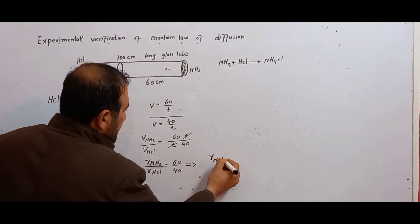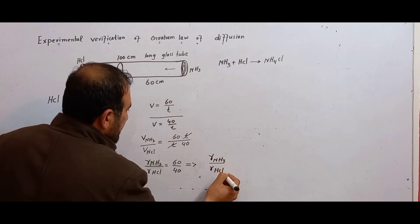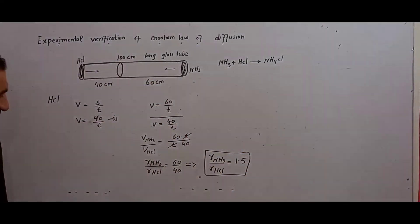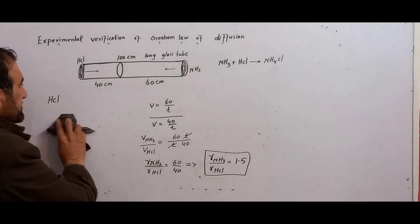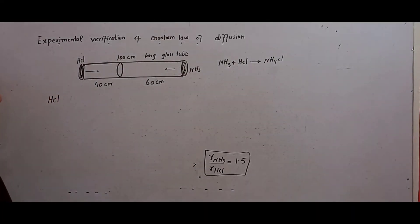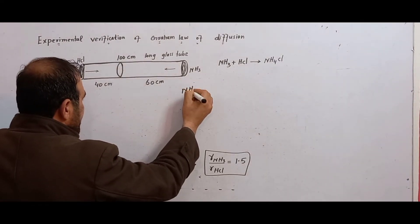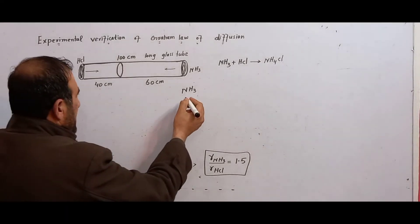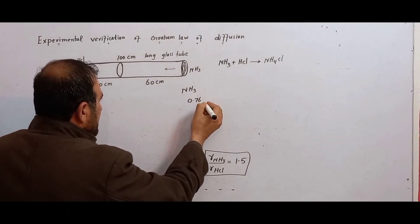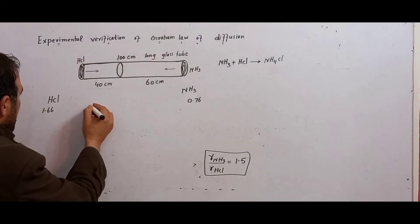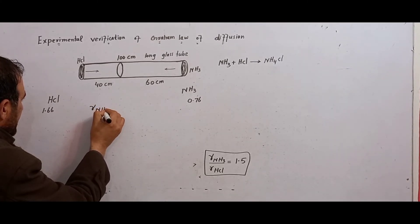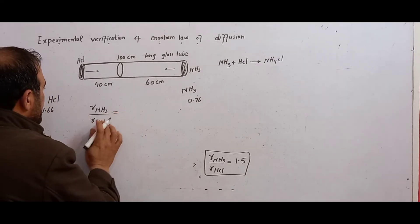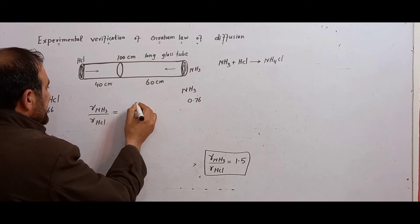The experimental value of R(NH3) / R(HCl) is 1.5. Now we apply Graham's Law of Diffusion to find the theoretical value. We are given the density of HCl as 1.66 g/dm³ and the density of NH3 as 0.76 g/dm³.